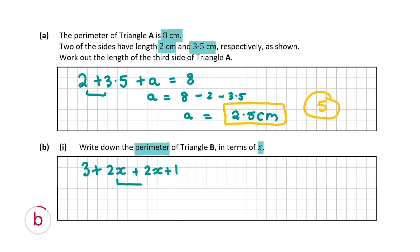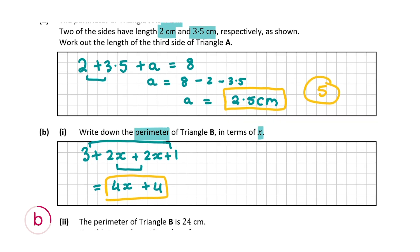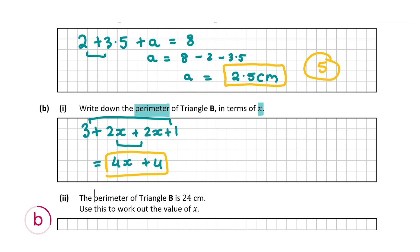So we can add 2X plus 2X to give us 4X and we can add 3 plus 1 to give us 4. So it's equal to 4X plus 4 and that is the perimeter of triangle B in terms of X. And for this question you are going to get 10 marks but that's with the second part as well. So for question B 1 and 2 you're going to get 10 marks. So now let's go on to the second part of question B.